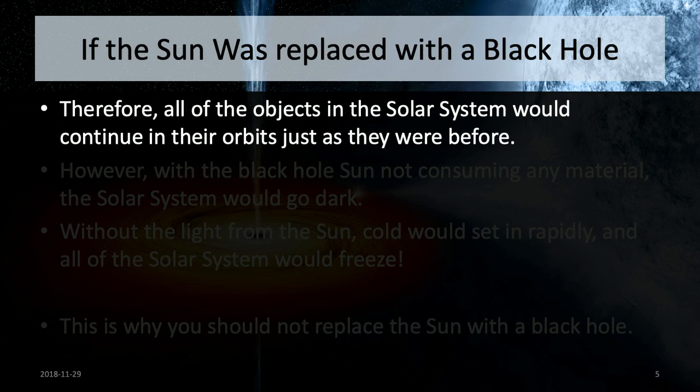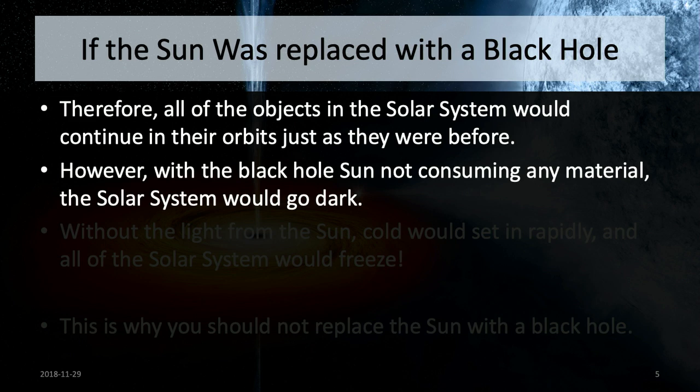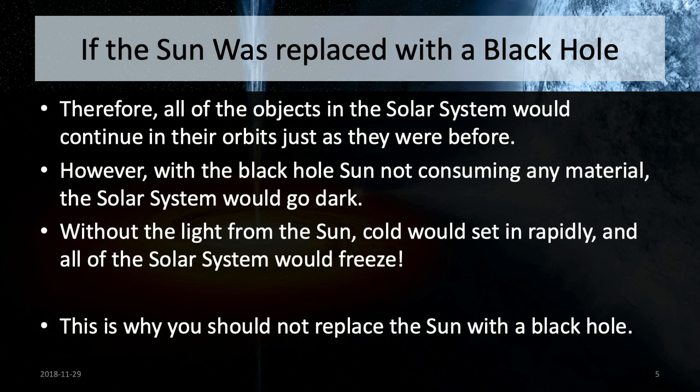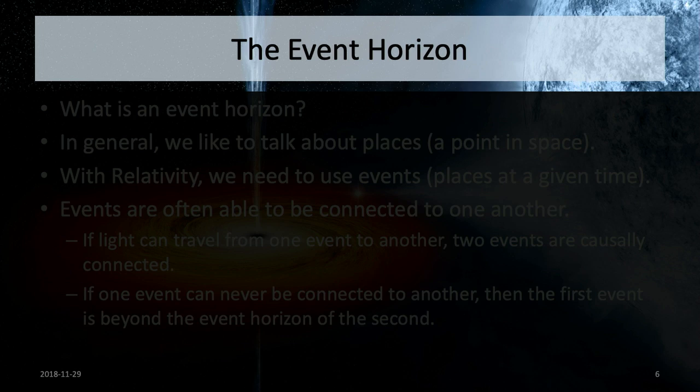A black hole actually works just like any other massive object — it exerts a gravitational force. So if we replace the sun with a black hole of equal mass, the curvature of space-time will not be any different for the majority of the solar system. Objects in the solar system would basically behave just as before. But now we have no source of light, the entire solar system goes dark, and everything in it would freeze.